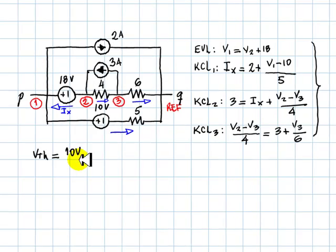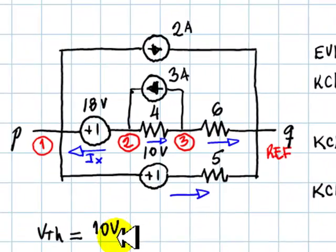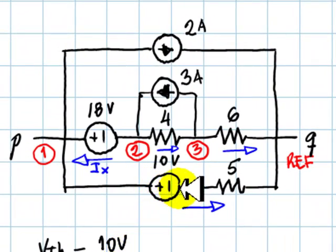Now we kill the sources to find R Thevenin. To kill the sources, we replace all voltage sources by short circuit, and we open the branches in which we have current sources.